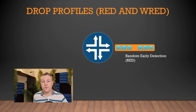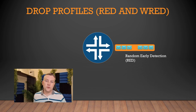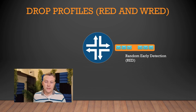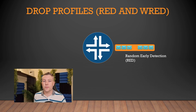And there's a variety of that called WRED, Weighted Random Early Detection. The idea is that as the queue starts filling up, the higher the probability that certain packets out of the queue will be dropped preemptively. In Junos, we do this by using drop profiles.